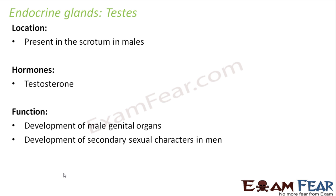Testosterone, estrogen, and progesterone all work in coordination with the pituitary gland, which is why the pituitary gland is known as the master gland. The pituitary gland tells the body when to produce sperms, and it also controls the production of sex hormones. Even though it is located in the brain, it controls the reproductive organs, the development and production of sex hormones, the adrenal gland secretion which helps in handling emergency situations, and the thyroid gland secretion which produces thyroxine for overall body development.